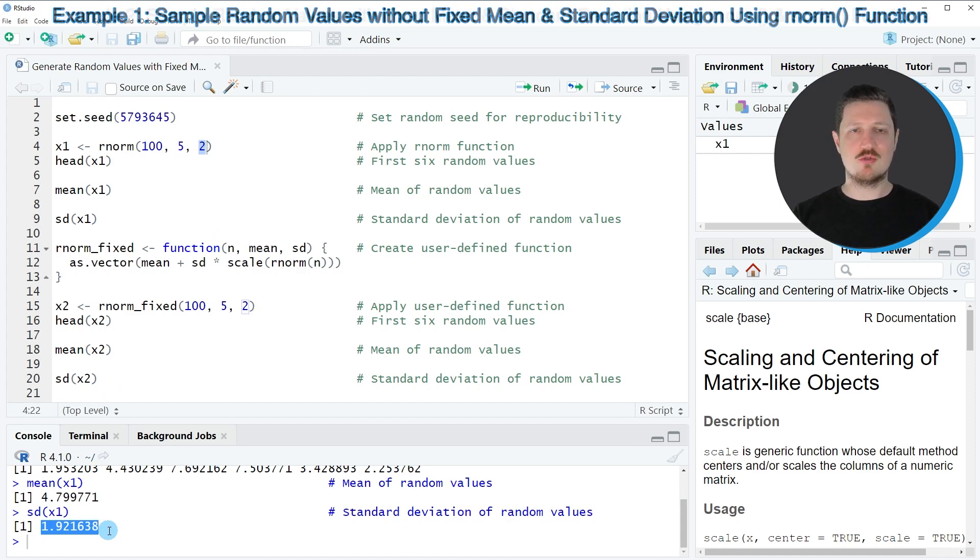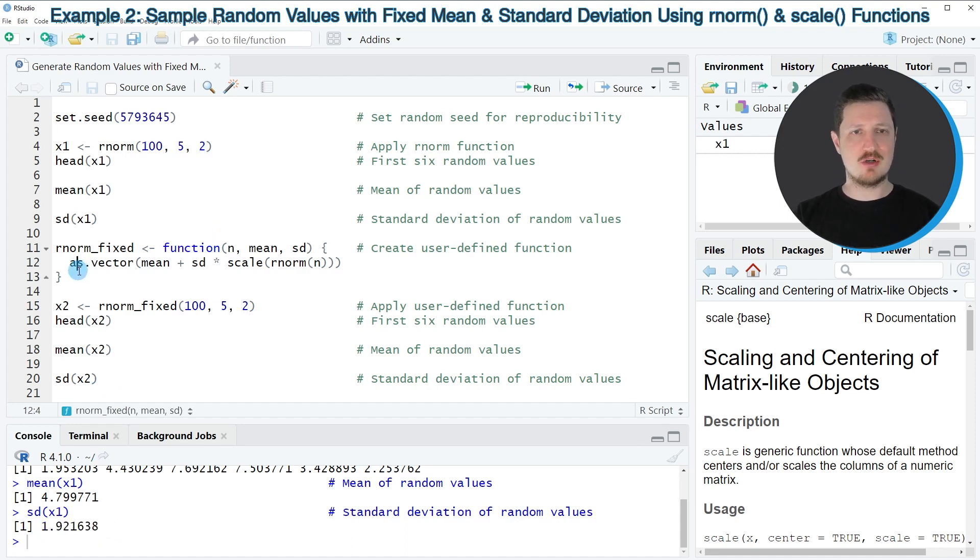So in case we want to generate random numbers with a fixed mean and standard deviation, then we have to create our own user-defined function as you can see in lines 11 to 13 of the code.